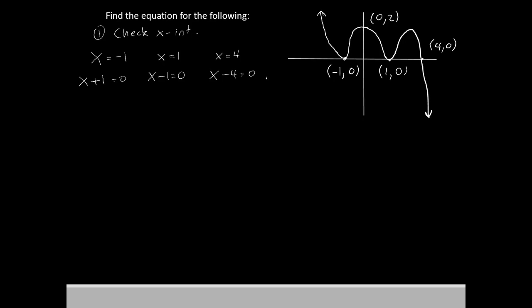Last time we also covered how the way in which they touch the x-axis changes the power. So let's make a note of that as well. Well, our first intercept at negative 1 touches but does not cross.